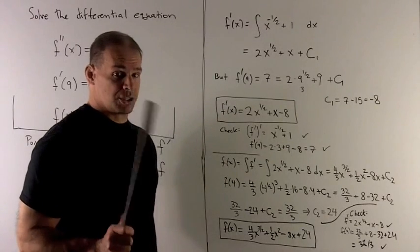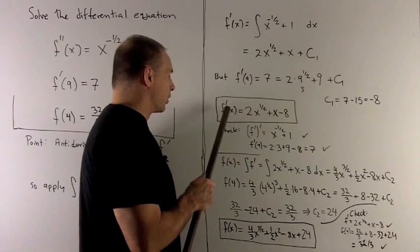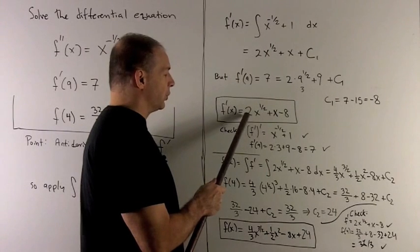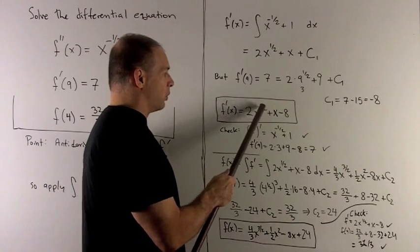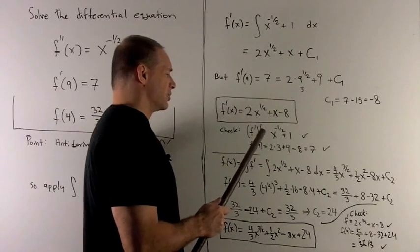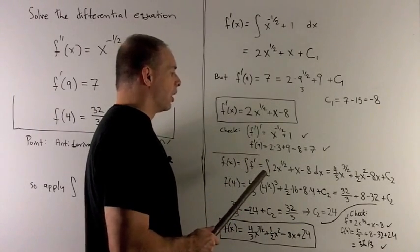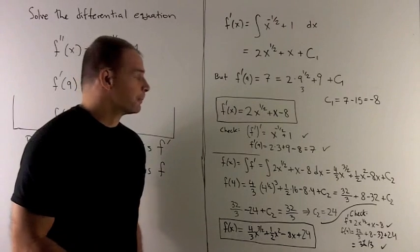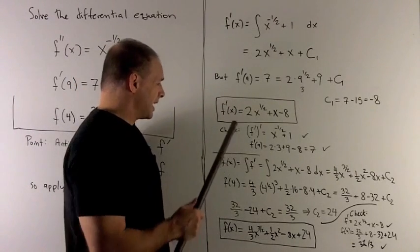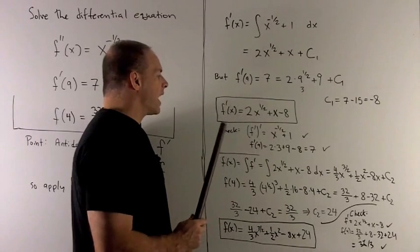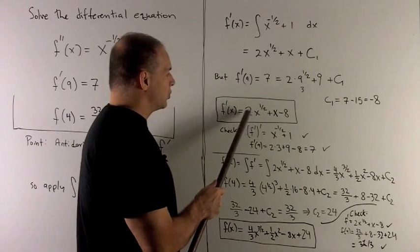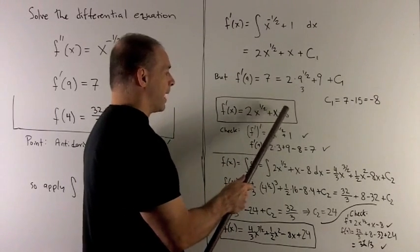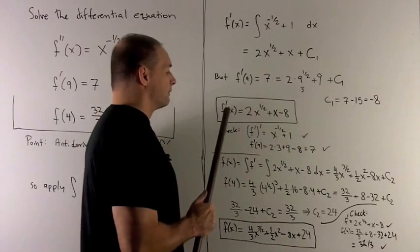We should check our answer, just to make sure we haven't flubbed anything. If I take the derivative of this, I should get the second derivative. So we bring down the 1 half, cancels out the 2. Subtract 1 off the exponent, gives me x to the minus 1 half. And then the derivative of x is going to give me a 1. Derivative of 8 is 0. So we wind up with x to the minus 1 half plus 1, which is what we had for our second derivative. Next, I stick 9 into here. We expect that we should get 7 out of that. So let's check. If I put 9 in here, I get 2 times 9 to the 1 half. That's 3. So this is going to give me 6, plus 9, gives me 15, minus 8, gives me 7. So this is the correct first derivative.